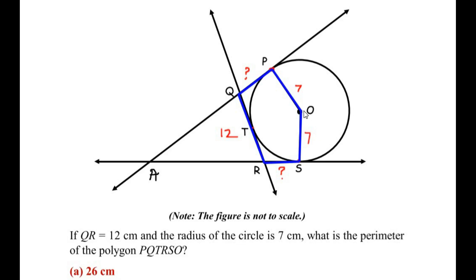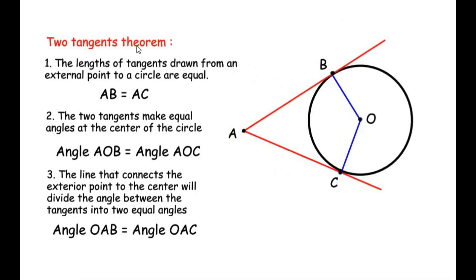To find the unknown sides, we are going to use a theorem called the Two Tangent Theorem. The first point of this theorem states that the lengths of the tangents drawn from an external point to a circle are equal. For example, if A is a point external to a circle and tangents AB and AC are drawn from it, then AB equals AC. So if AB is 6 cm, AC is also 6 cm.